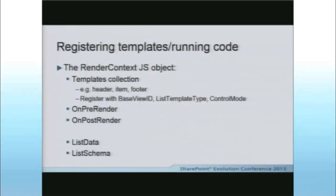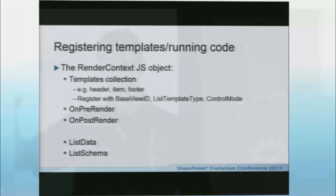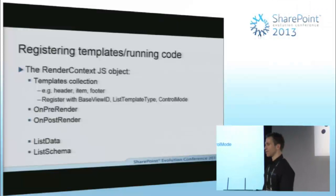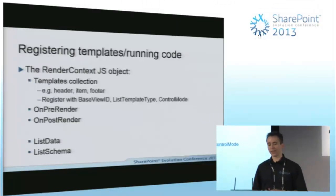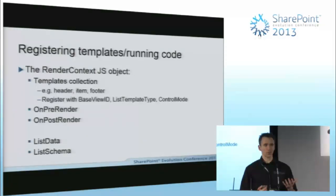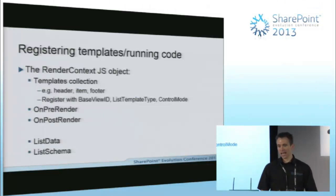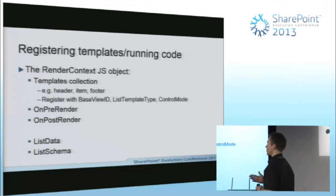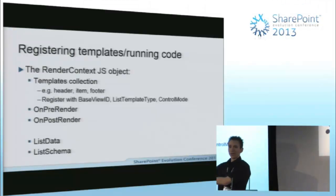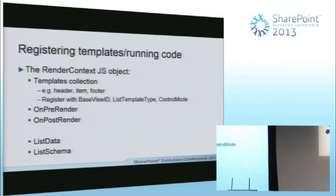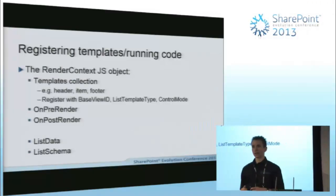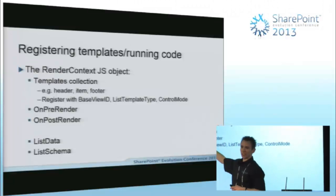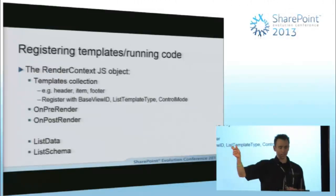This is kind of a reference slide, but lots of these approaches revolve around this technique. When we work in JavaScript, Microsoft provide us with an object called Render Context, and it has some templates. This is how we give SharePoint our custom HTML for output. If I'm working in a list, the list has a templates collection with header, item, and footer. If I want my items output with a green background, then I need to hook into the item template and supply my HTML — and then my list comes out the way I want it.